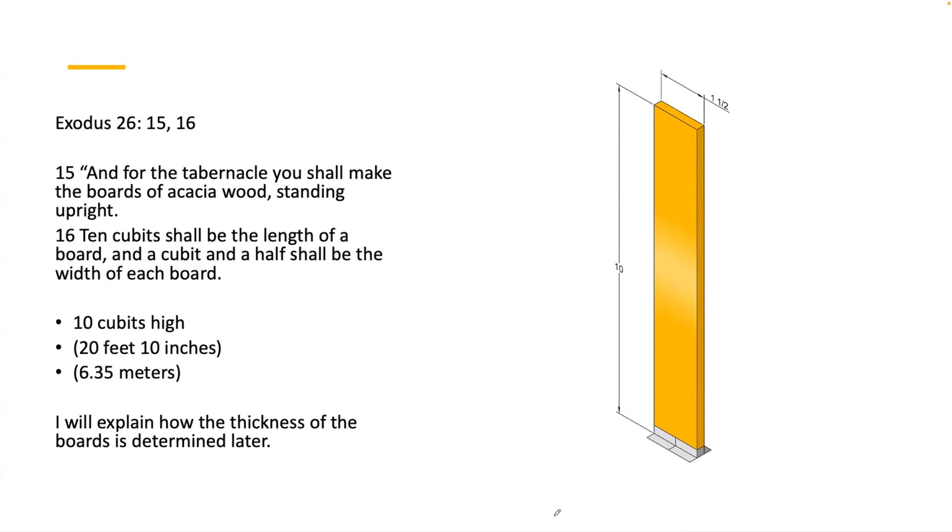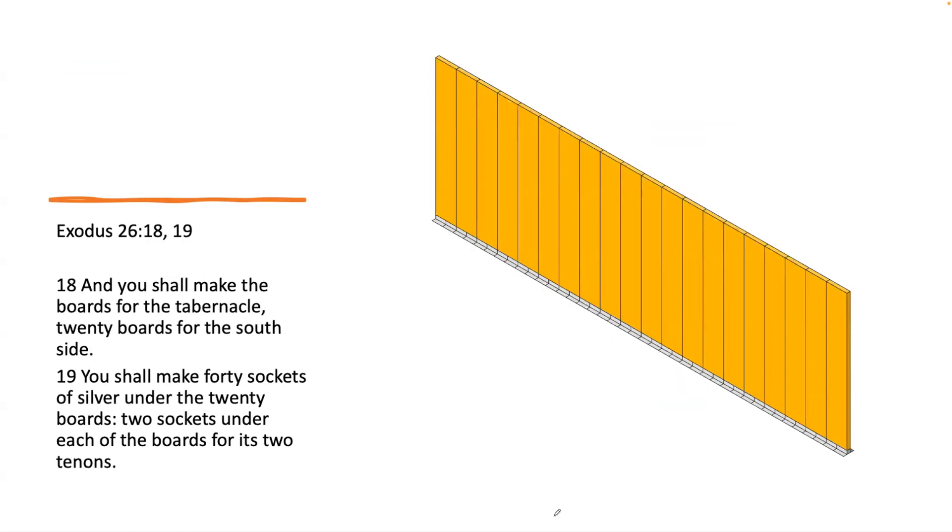I will explain how the thickness of the boards is determined later. Exodus 26:18-19: 'You shall make the boards of the tabernacle, twenty boards for the south side, and you shall make forty sockets of silver under the twenty boards—two sockets under each of the boards for its two tenons.'